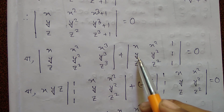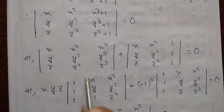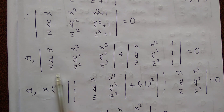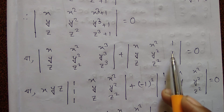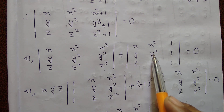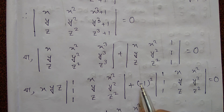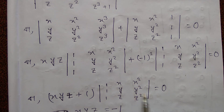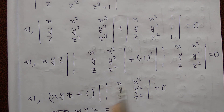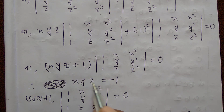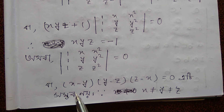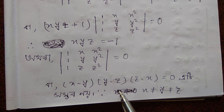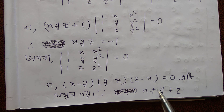For the condition x not equal to z: taking x, x square, 1; y, y square, 1; z, z square, 1 equal to 0. Taking x from first column, y from second column, z from third column as common, we get 1, 1, 1; x, y, z; x, y, z. Converting the third column: the determinant equals 0. This gives x minus y, y minus z, z minus x equal to 0. Since x is not equal to y and not equal to z, the determinant is zero.